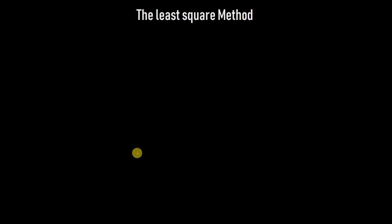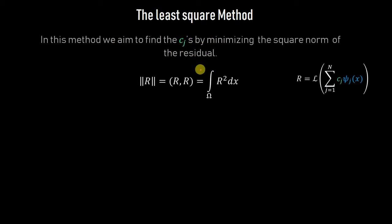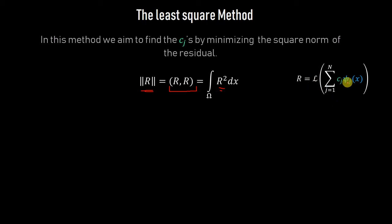There is another method called the least squares method, which is also a special case of the weighted residual method. In this method we find the Cⱼ's by minimizing the squared norm of the residual. The squared norm is the inner product of R with itself — that is, the integral of R² over the domain — where R is the PDE evaluated by substituting uH into the operator L.